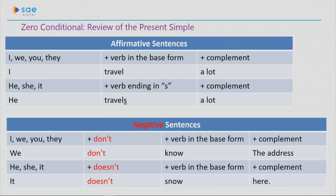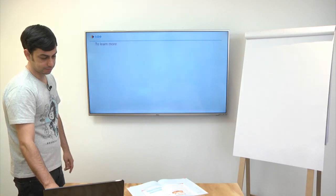For negative sentences, with I, we, you or they, I will use don't, followed by a verb in base form and then the complement. For example, we don't know the address. Now, for he, she or it, my auxiliary will be doesn't, followed by a verb also in base form and the complement. It doesn't snow here.